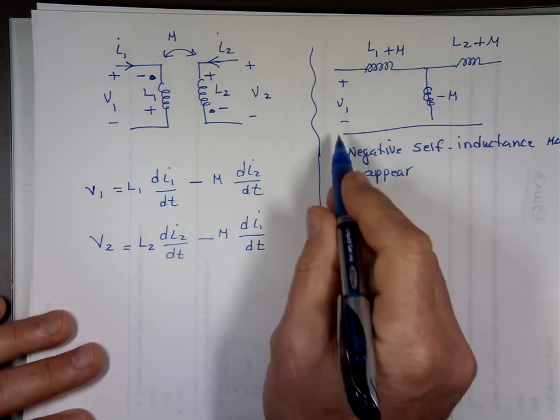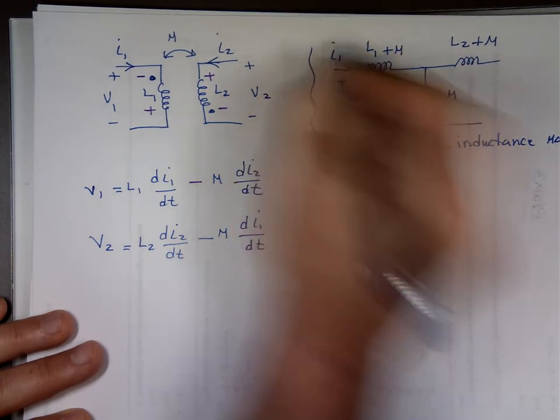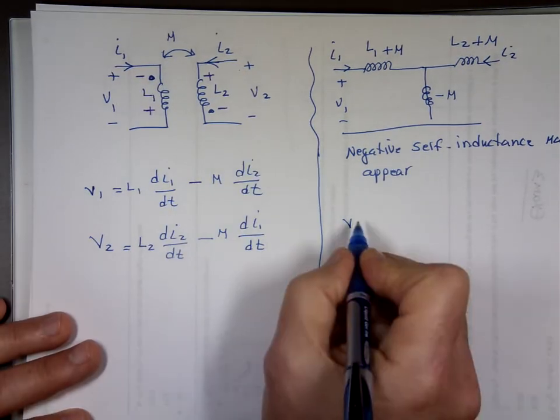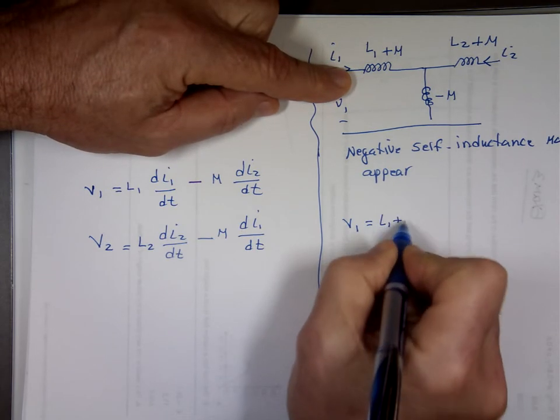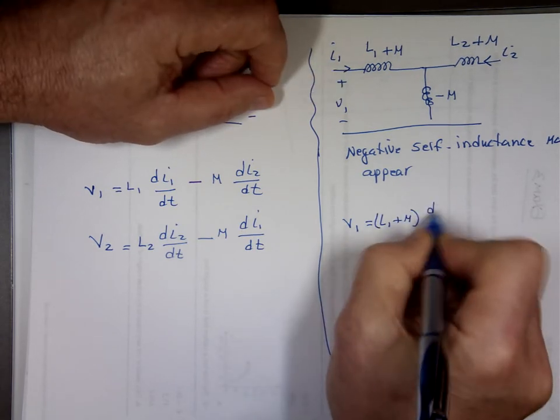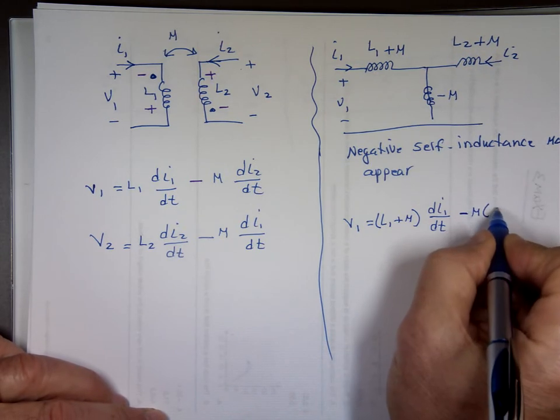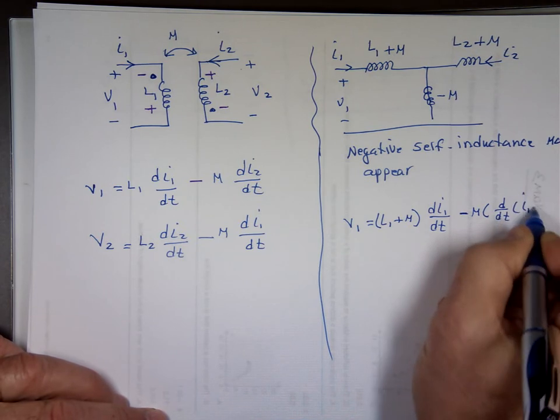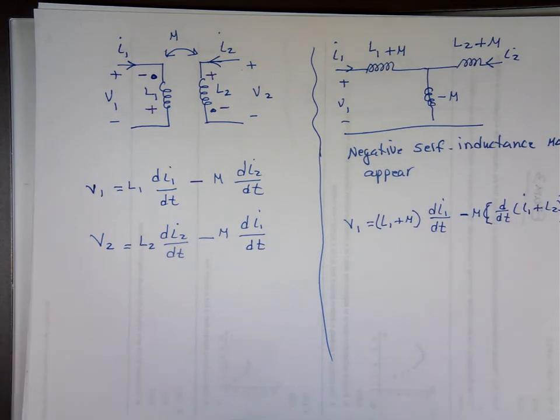So, what's V1 here? Again, I sub 1 is going in this way. And I sub 2 is going in this way. The same direction. So, V1 is going to equal what? L1 plus M times Di1, Dt. Here's the minus M times the current down, which is derivative of I1 plus I sub 2.